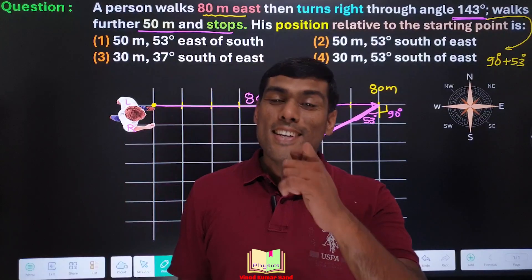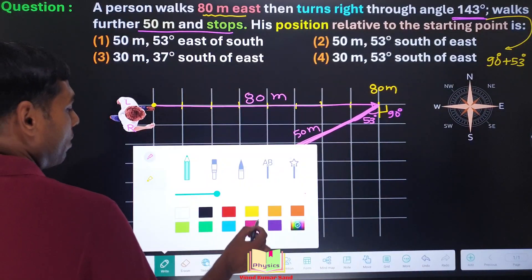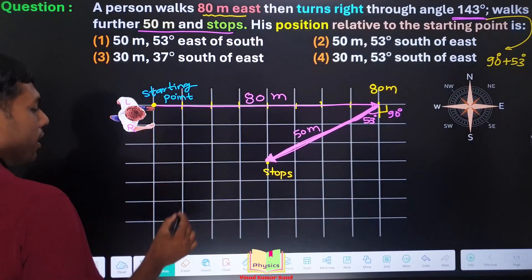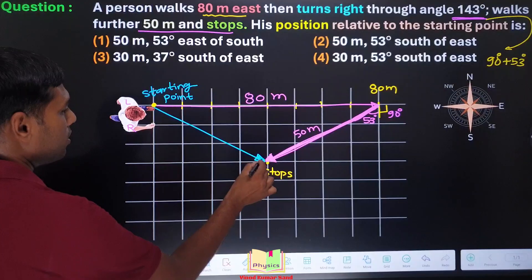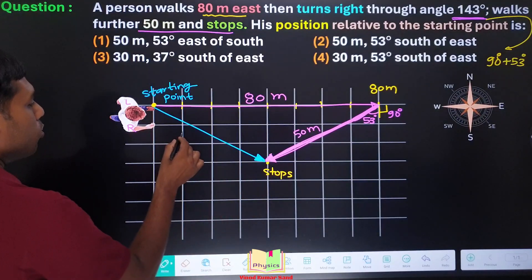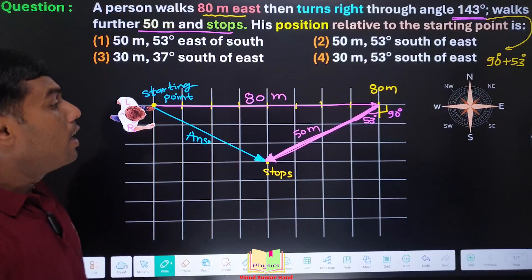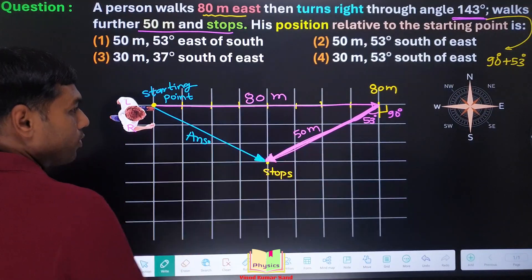Now the question is asking his position with respect to the starting point. See, this was the starting point, and with respect to starting point, this is the position of the person. So here is your transfer, you need to find this. Let us do the calculation, we can do it very easily using trigonometry.